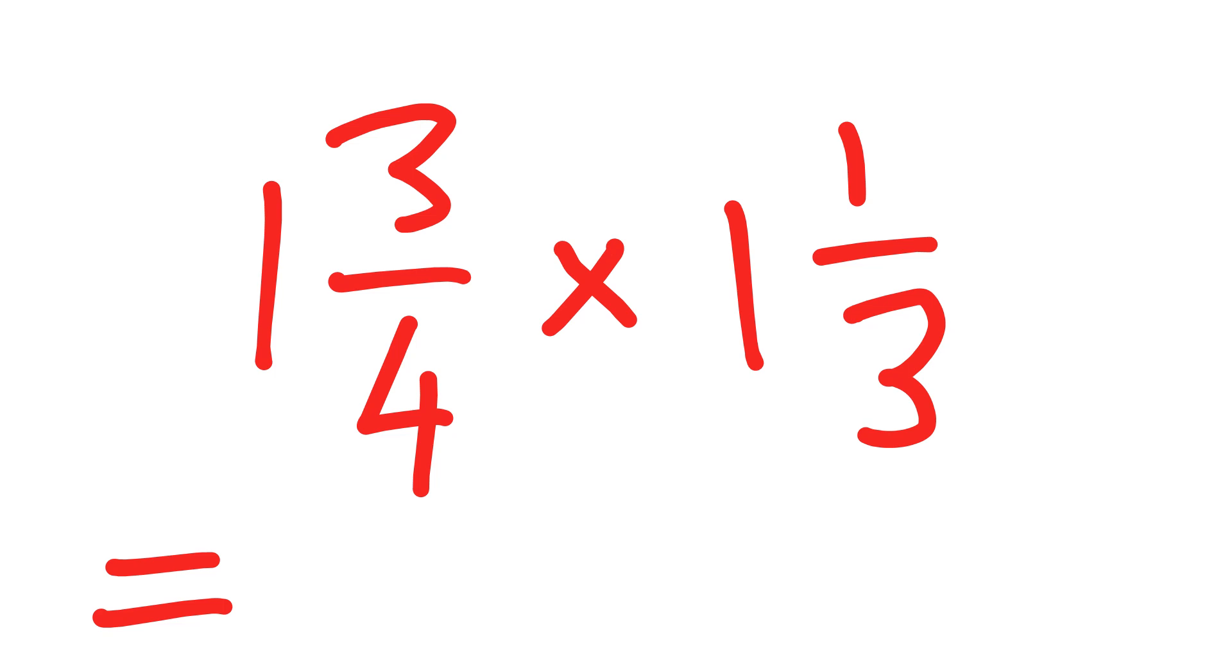Step one, convert them both to improper fractions. So one and three quarters here will equal seven quarters because one whole is equal to four quarters. You have four quarters plus three quarters which equals seven quarters.